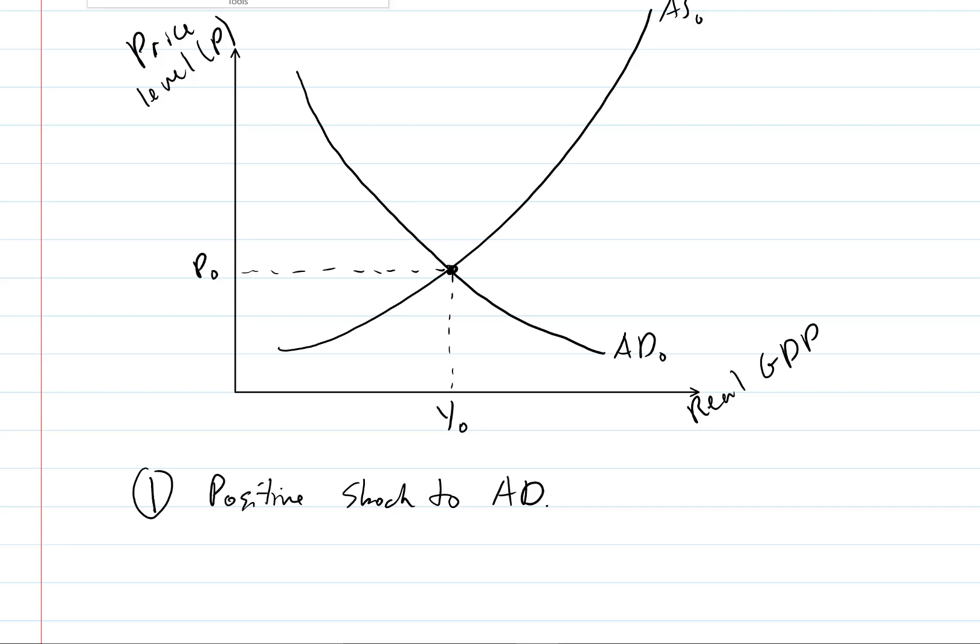So let's change our colors here. And so we're going to have a positive shock to the AD curve here. We'll label that one. Now, this is going to be our new equilibrium where the new AD curve meets the old AS curve.